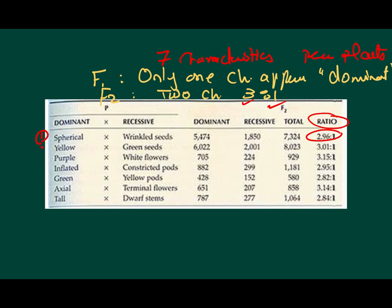And here is the table of his results. Spherical and wrinkled seeds, yellow and green seeds, purple and white flowers, inflated and constricted pods, green and yellow pods, axial and terminal flowers, tall and dwarf stems. The ratio is almost 3 to 1 in all the experiments. This is what led Mendel to put his law for independent assortment, which says that each trait is inherited and assorted independently of the other one.